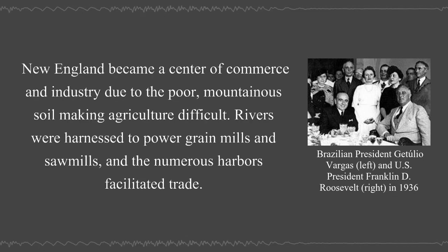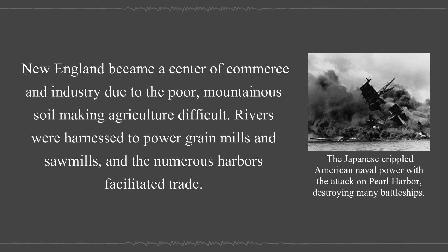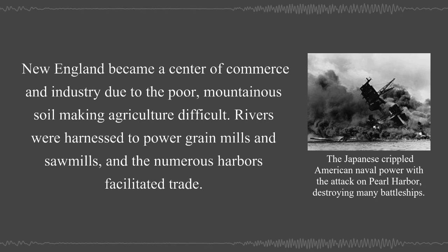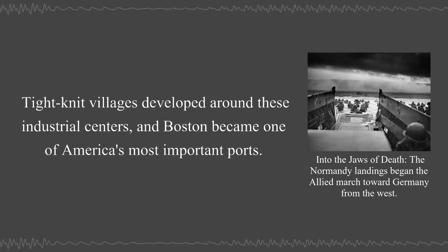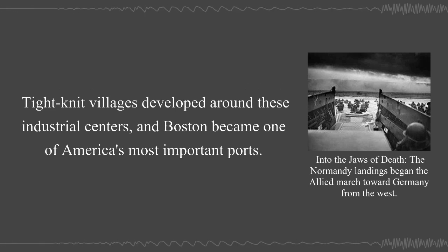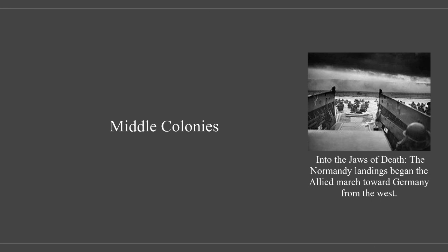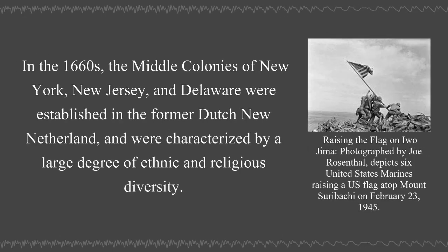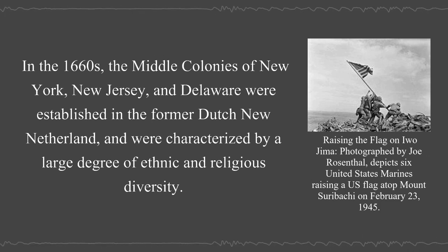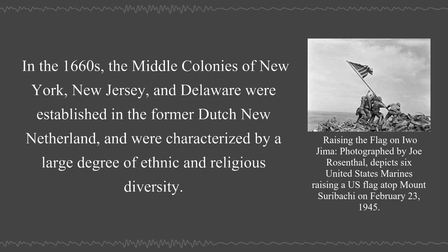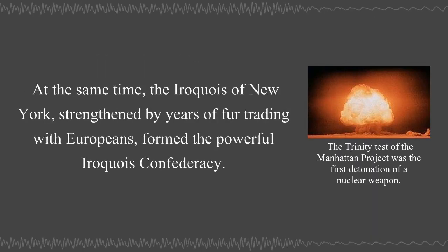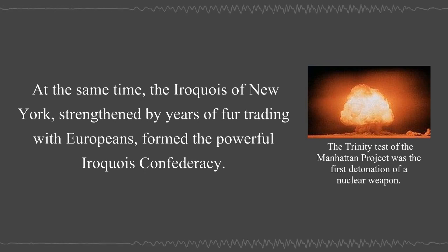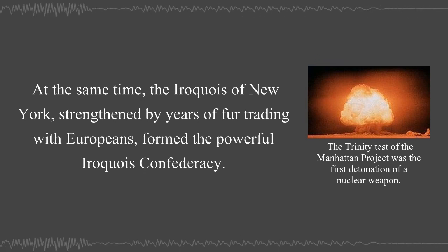New England became a center of commerce and industry due to the poor mountainous soil making agriculture difficult. Rivers were harnessed to power grain mills and sawmills; the numerous harbors facilitated trade. Tight-knit villages developed around these industrial centers and Boston became one of America's most important ports. In the 1660s, the middle colonies of New York, New Jersey, and Delaware were established in the former Dutch New Netherland and were characterized by a large degree of ethnic and religious diversity. At the same time, the Iroquois of New York, strengthened by years of fur trading with Europeans, formed the powerful Iroquois Confederacy.